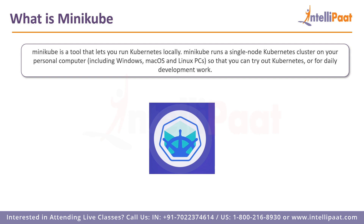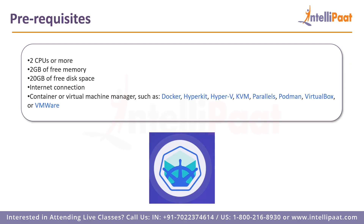We have some prerequisites you must have in order to run Minikube. First, your computer should have two CPUs or more — octa-core, quad-core, whatever your PC has. It should have at least 2 GB of free memory, 20 GB of free disk space, and an internet connection. You also need a container or virtual machine manager such as Docker, HyperKit, Hyper-V, KVM, Parallels, Podman, VirtualBox, or VMware.